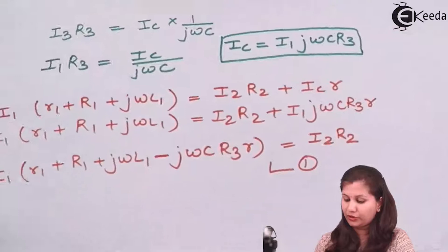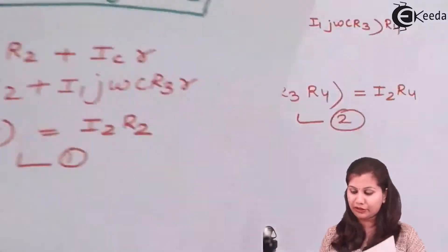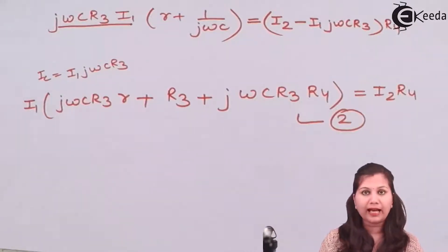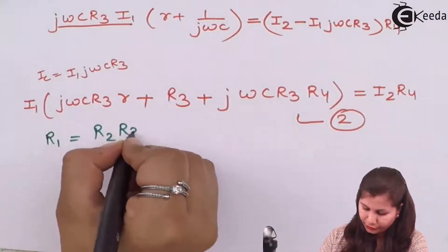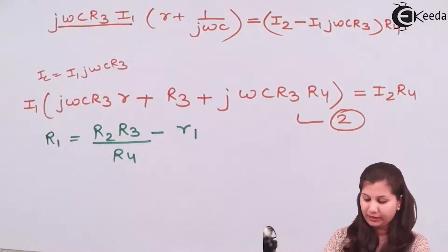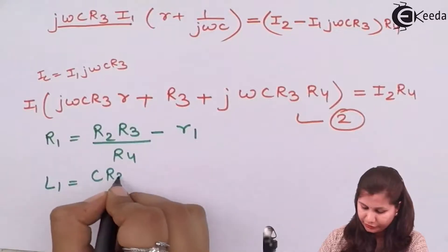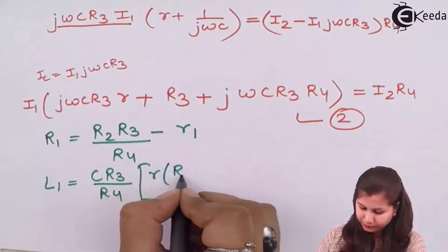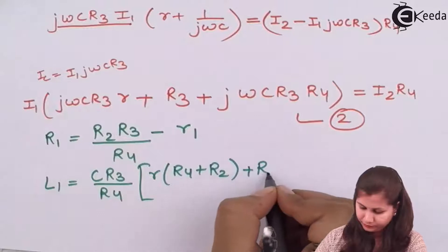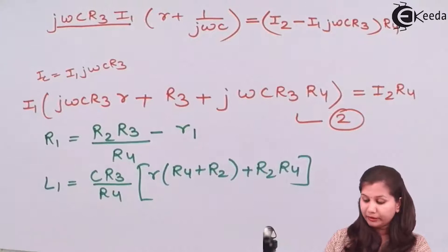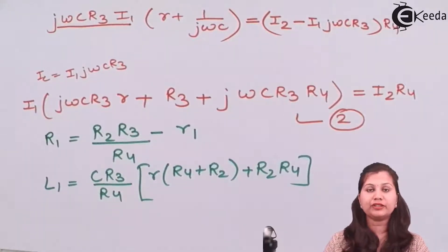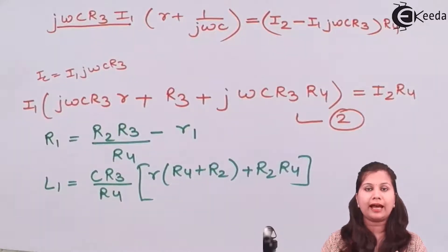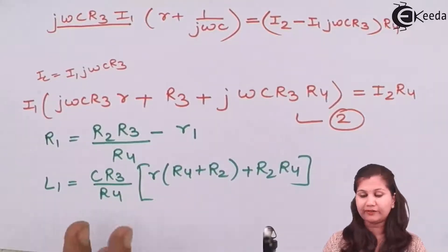Solving the two equations by separating real and imaginary parts, the value of R1 comes out to be R2·R3/R4 − small r1, and the value of L1 comes out to be C·R3/R4·(small r·R4 + R2·R4 + ...). At balance condition, the detector gives null deflection, meaning the potentials at B and E are equal, and applying those conditions we can derive these values.